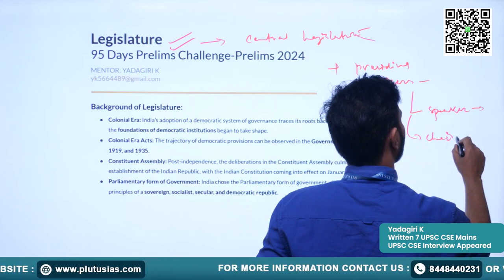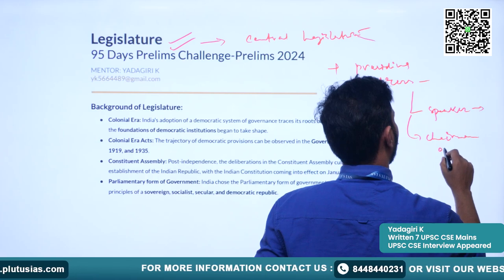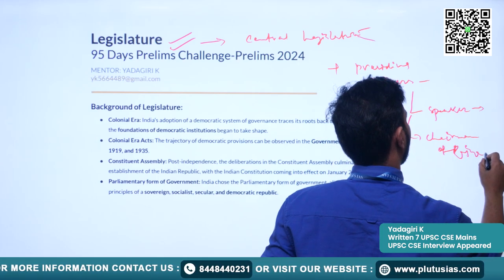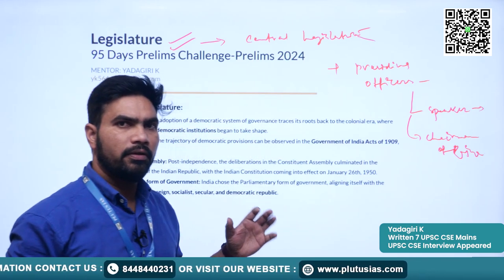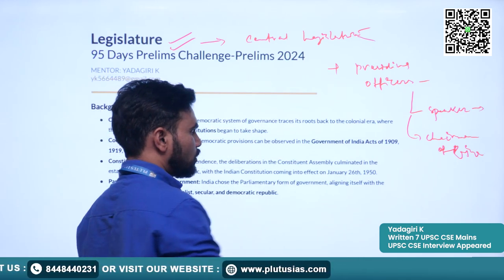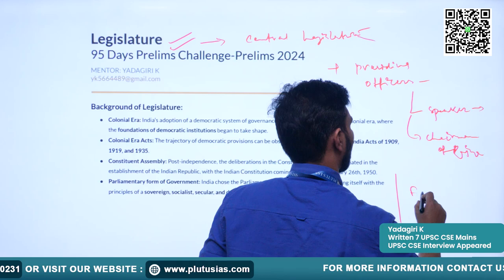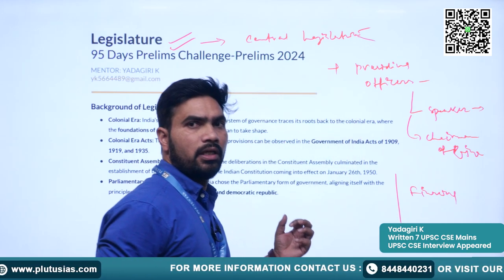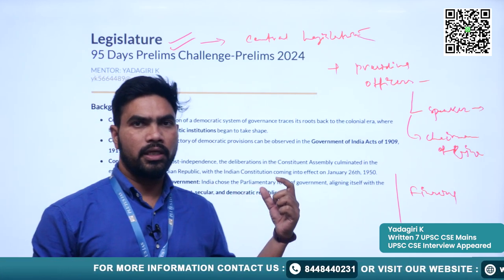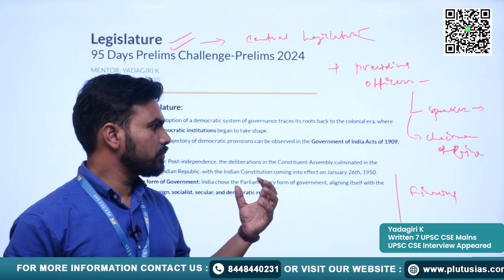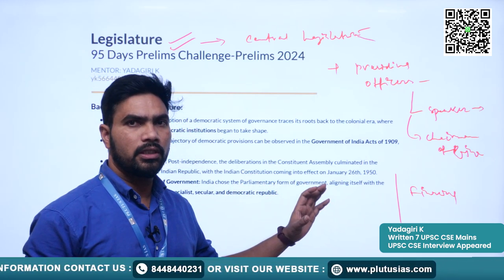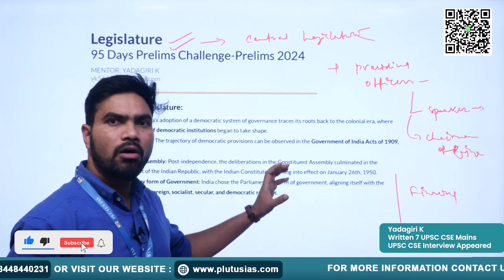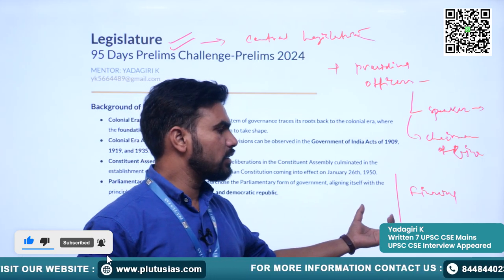Central Legislature comprises Lok Sabha and Rajya Sabha. We will also see the two Presiding Officers — the Speaker of the Lok Sabha and Chairman of Rajya Sabha. If time permits, I will also discuss financial control of the Legislature over the Executive.